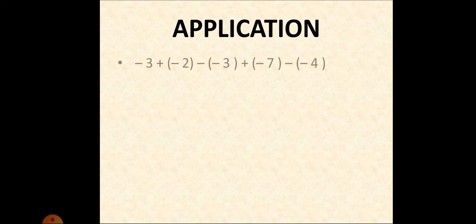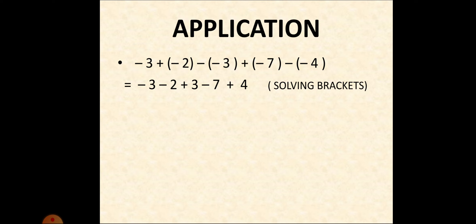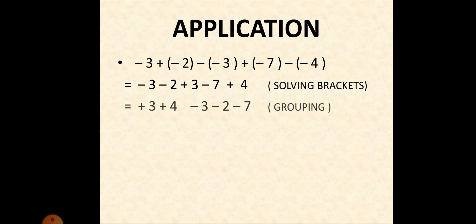Now, how to apply it? Let's apply this to a question: minus three, plus of minus two, minus of minus three, plus of minus seven, minus of minus four. The first step is solving the brackets. Plus of minus becomes minus, minus of minus becomes plus, plus of minus seven becomes minus seven, minus of minus four becomes plus four. Next, grouping: the positives are plus three and plus four; the negatives are minus three, minus two, and minus seven. We separate the positives and the negatives.